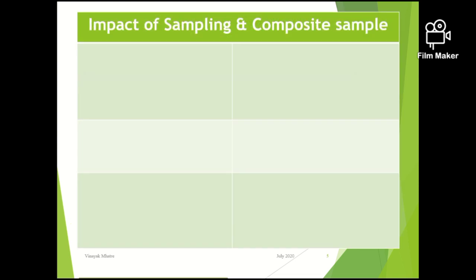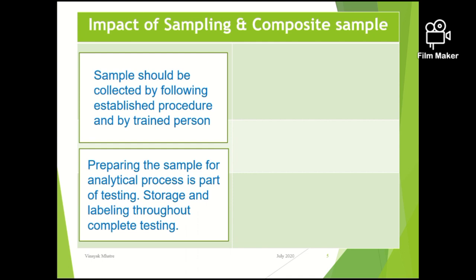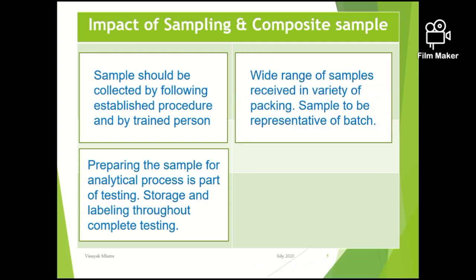Regarding impact of sampling and composite sample: samples should be collected by following established procedures and by trained personnel — training on sampling is very important and should not be taken lightly. Preparing the sample for analysis is part of the testing process. Storage and labeling of the sample throughout complete testing should be maintained so that sample integrity is not under question at any stage. A wide range of samples are received in various packaging — liquids, powder, granulation, tablets, solutions, creams in homogeneous categories, and suspensions and semi-solids in heterogeneous categories. Persons involved in sampling and analysis should be well aware of the importance of sample homogeneity before testing.